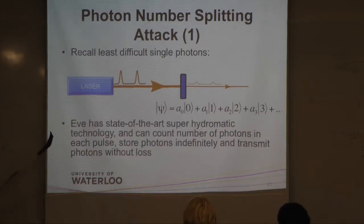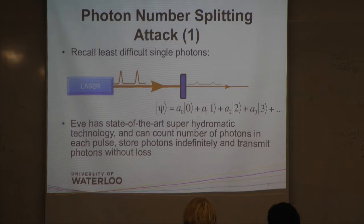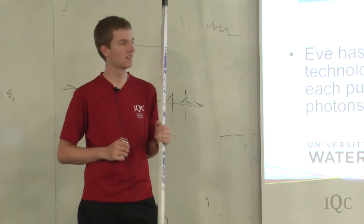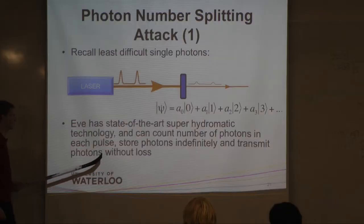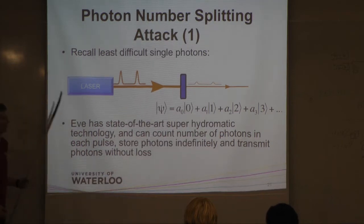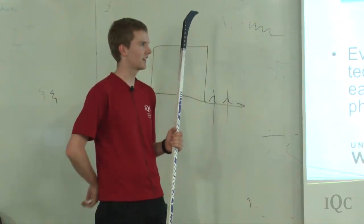So what Eve can do, well, she has much better technology than we have. She's only limited by quantum mechanics, so she can basically build anything. So she can actually count the number of photons in each pulse without disturbing it. Quantum mechanics allows you to count photons without disrupting the quantum state. She can also store photons, so she can just keep a photon around and measure it later at some point. And she can also transmit photons without loss so Alice and Bob don't detect it.